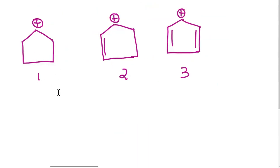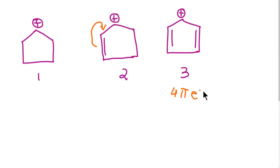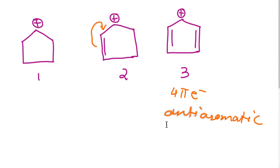In this example, the first structure shows no resonance. The second shows resonance. The third has two double bonds and appears to show more resonance; however, it contains 4 pi electrons, making it anti-aromatic. Anti-aromatic compounds are most unstable. Therefore: the second one is most stable, the first is next, and the third is least stable because it is an anti-aromatic compound.